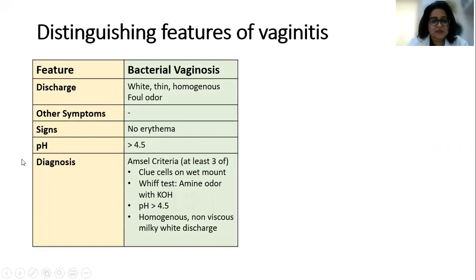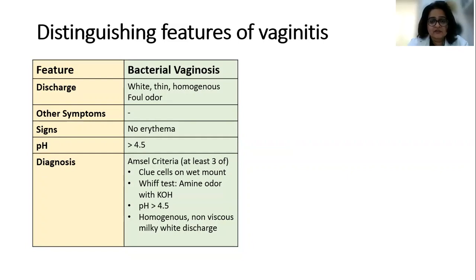The first is bacterial vaginosis. The discharge is white, thin, homogeneous, non-viscous, and the patient will have a foul odor or complain of a bad-smelling discharge. She won't have any other symptoms; there will not be any erythema. When we put in a speculum, the vagina and cervix will appear absolutely normal. pH is more than 4.5.